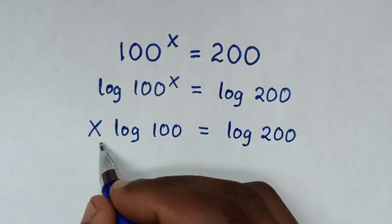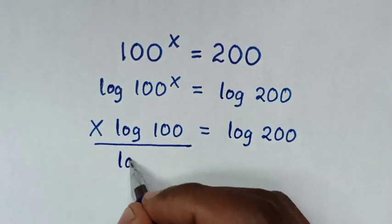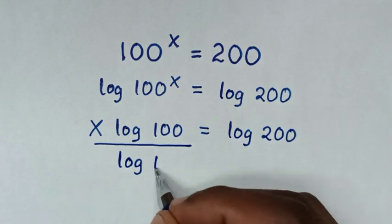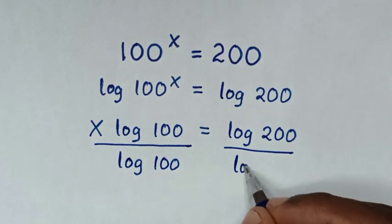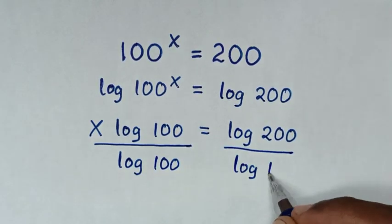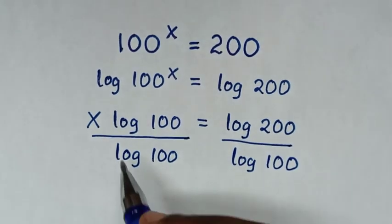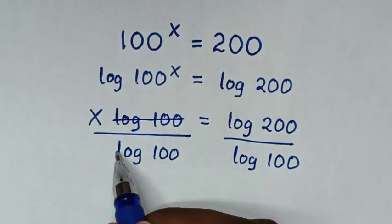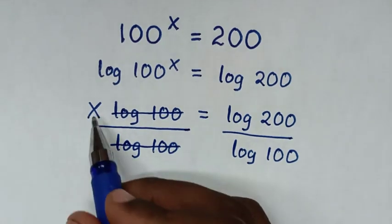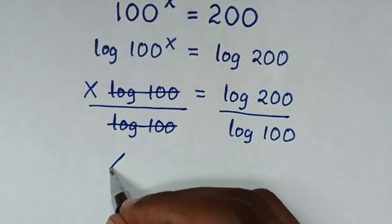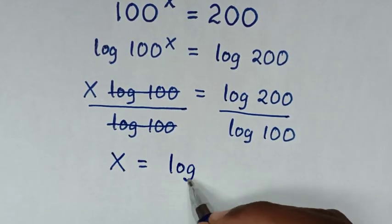Then in the next step, we divide by log of 100 on both sides. So this log of 100 will cancel, and it will be: x is equal to log of 200 over log of 100.